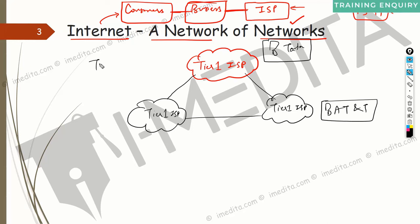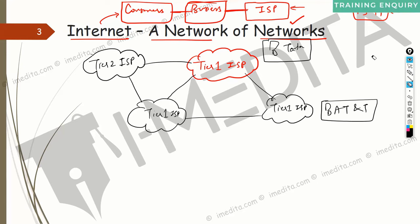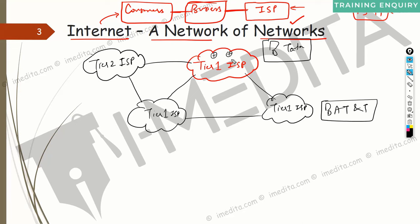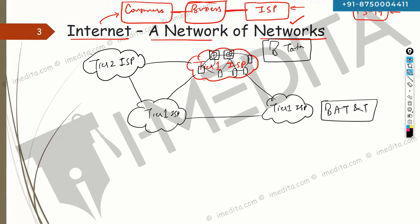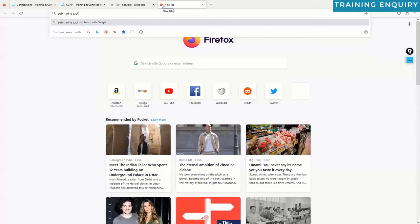Then you have tier-two ISPs, which are smaller. They typically get connected to multiple tier-one ISPs for redundancy. Each cloud-like shape I draw represents a lot of routers, geographic locations, offices, and lots of fiber. Even tier-one and tier-two ISPs have cables going through the oceans — if you search for 'submarine cable map,' you can see the massive scale of fiber connecting continents.